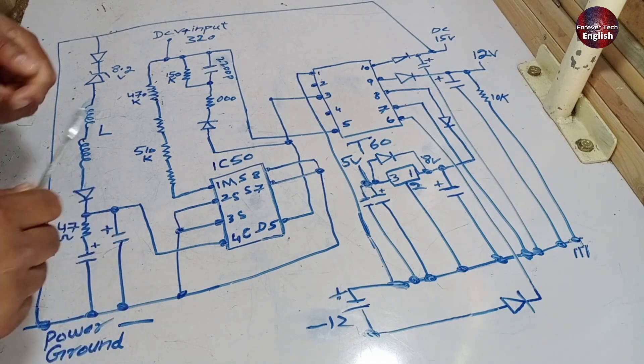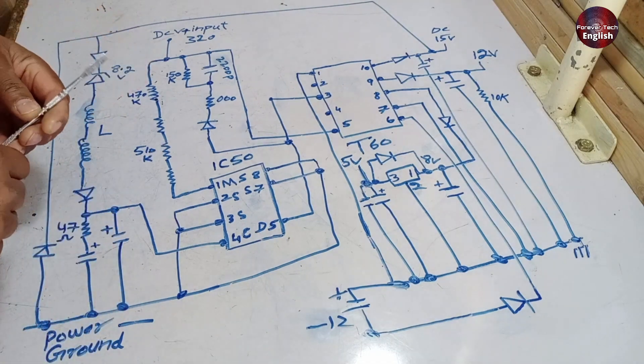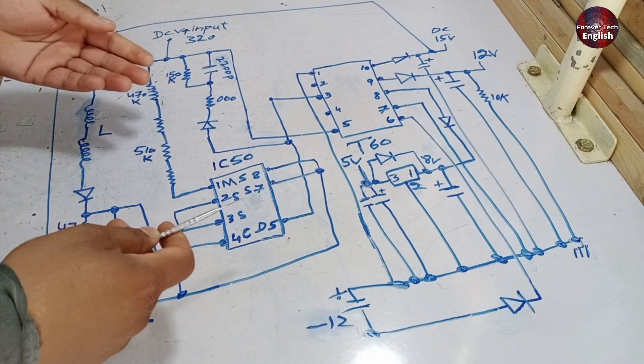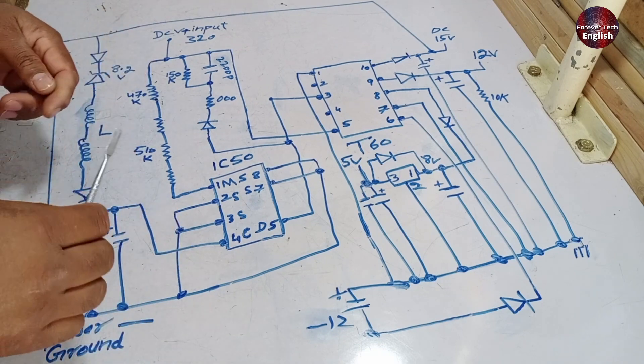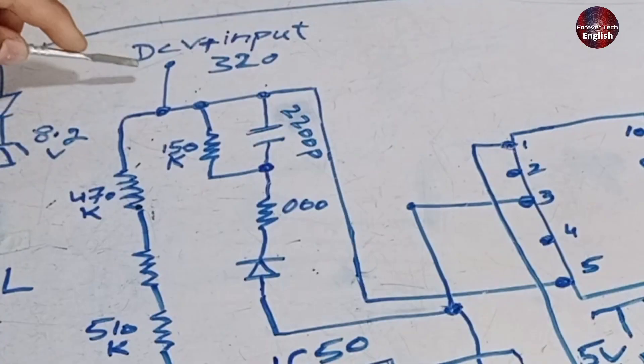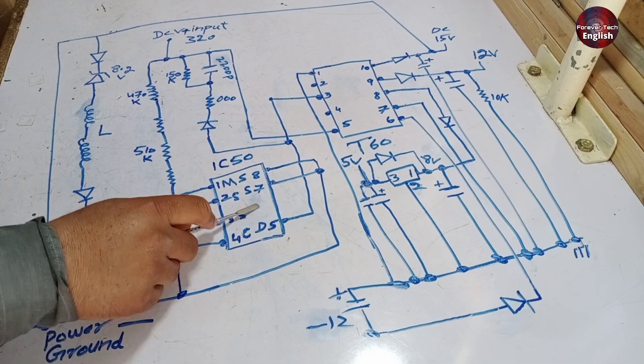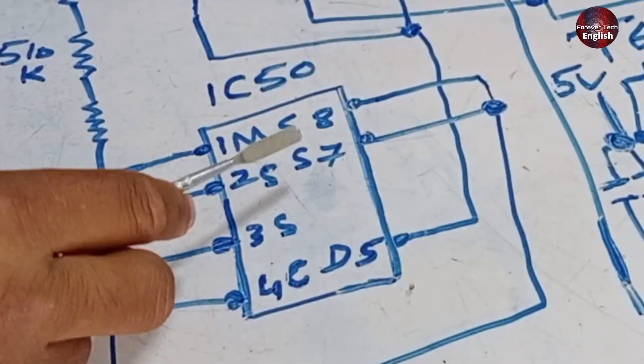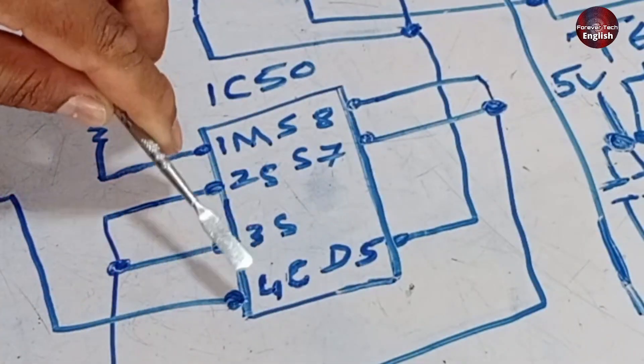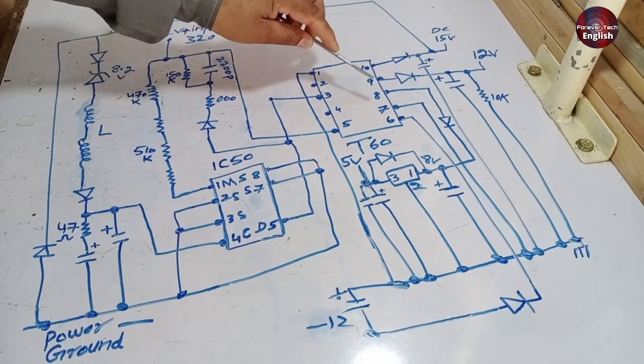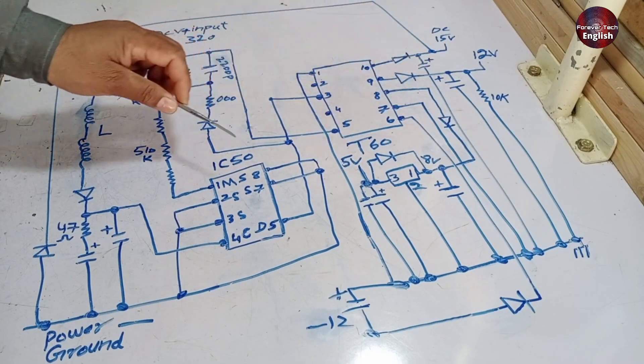Now I've explained both the high side and the low side of the SMPS schematic, but how does it actually work? This system remains unstable until it receives feedback. So what happens when we provide it with 320 volts? The voltage reaches the circuit, and the switching IC turns it on for a few milliseconds directly. When it turns on, the chopper also activates, and all the necessary voltages start being generated.